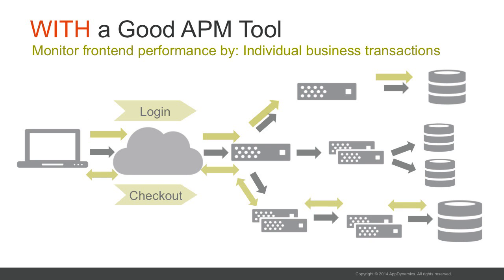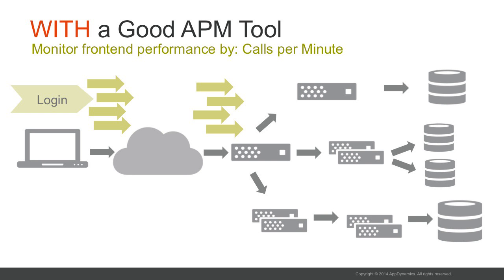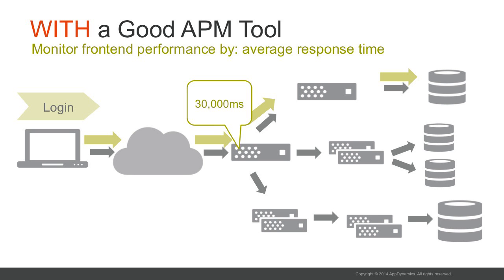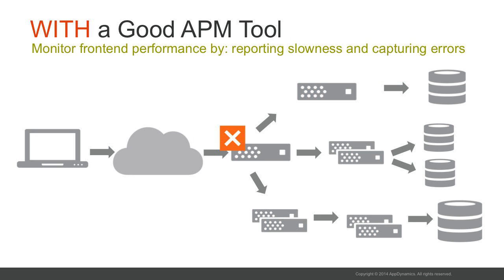It's also critically important to know the performance of individual business transactions, such as login versus checkout, rather than only monitoring the application as a whole, which tends to hide transaction-specific problems. You can check the calls per minute of any business transaction to see what level of traffic that function of your application is experiencing. Average response time is also a key indicator, so we should be able to monitor that. And in the event of slowness and errors, it should proactively capture and correlate all relevant data for you.